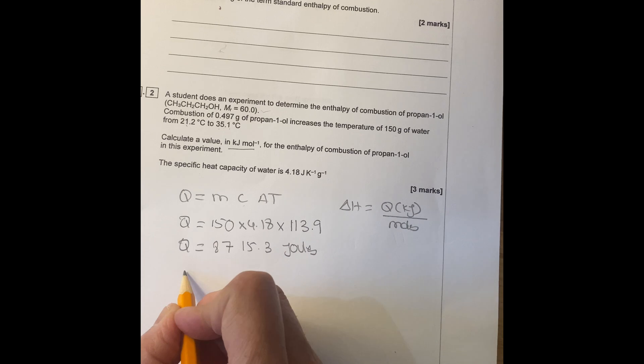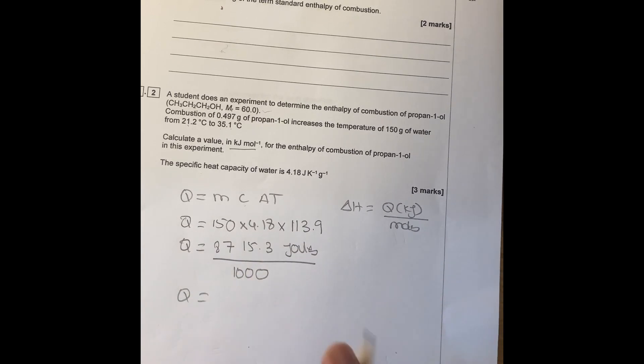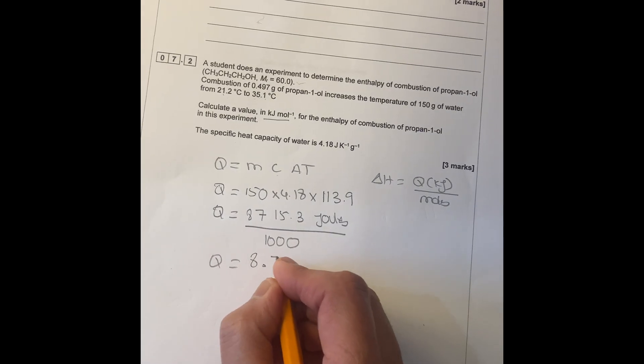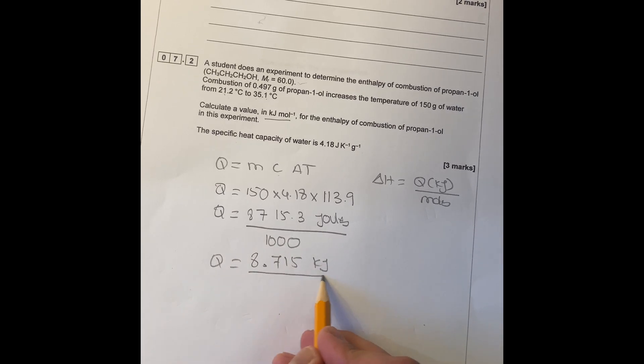Now we've got to change this to kilojoules, so you divide that by 1000. Then you've got Q in kilojoules, which is 8.715 kilojoules. So you got that first to start with.